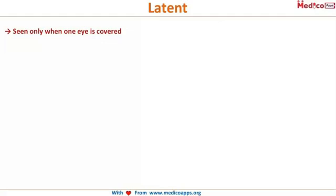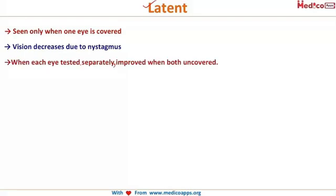Latent nystagmus is seen only when one eye is covered. When both eyes are open, it is not present — hence the term latent. Vision decreases when the nystagmus is evident; when each eye is tested separately there is nystagmus and reduced vision. However, vision improves and nystagmus is absent when both eyes are uncovered.